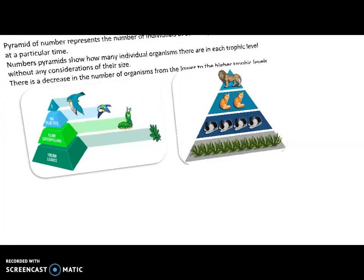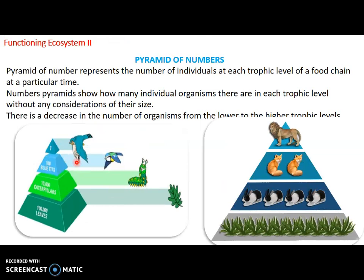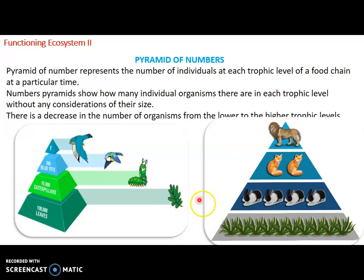The pyramid of numbers shows how many individual organisms are in each trophic level, without consideration of their size. There is always a decrease in the number of organisms as you go to higher trophic levels. The pyramid of numbers differs depending on the ecosystem — at times you can see an inverted pyramid in different ecosystems, where the producers might be at the upper side, depending on whether it's an aquatic environment or not.